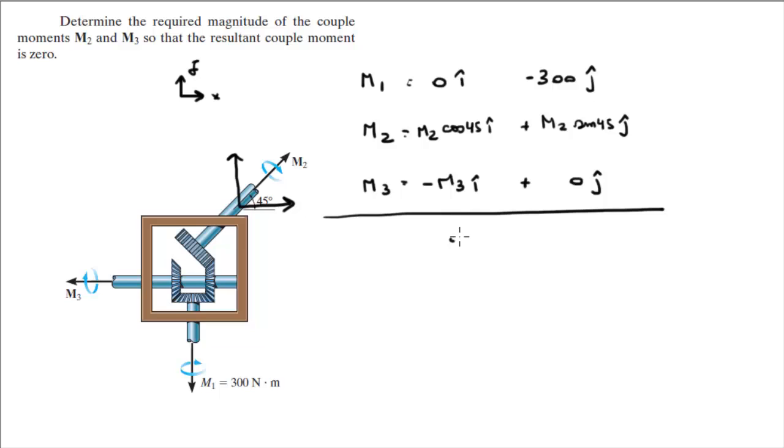And when you add them up, they're telling you that the resultant couple moment is 0. So all you got to do is add the i's, add the j's together, and you get your equations.